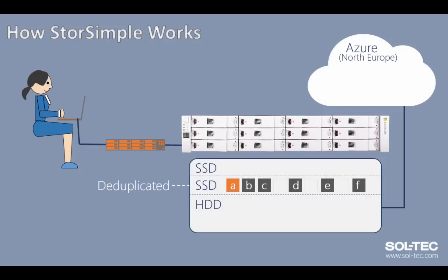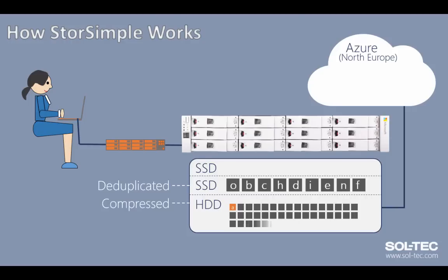This data is deduplicated and written down to the working sets. While the user is still accessing the document it remains current and stays on the SSD tier for fast reads and writes. Over time, however, the user starts working on another document and the original data becomes less accessed and cold. It's moved down to the HDD layer where it is also compressed. As the appliance fills up with other data, thresholds are reached and the original cold file is moved off to the cloud.